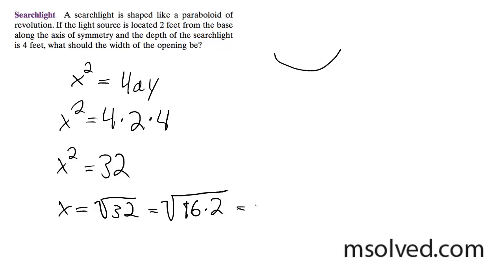Which gives us 4√2. But what this is, this is how far from here to here, just half the value, so we've got to double this and take it times 2.